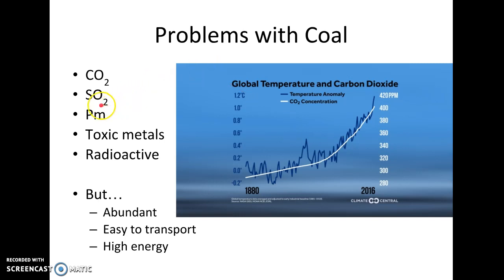Another problem with coal is sulfur dioxide. We're worried about SO2 because it will lead to acid rain, which we'll discuss again in the air pollution unit. Acid rain leads to problems in our waterways where it will change and lower the pH of water. It will also damage plants — it can literally burn plant tissue — and cause problems with human structures. PM, or particulate matter, is also released when we burn coal, and that's a real problem for human health. When it gets into your lungs, it can cause asthma and aggravate bronchitis, causing many respiratory issues.